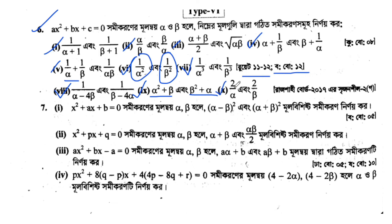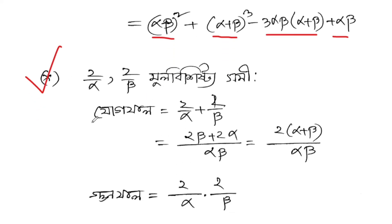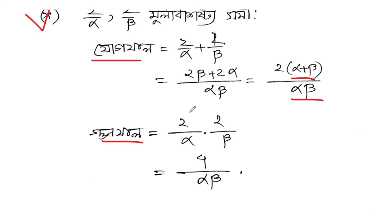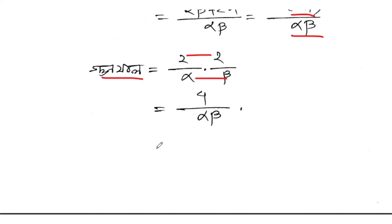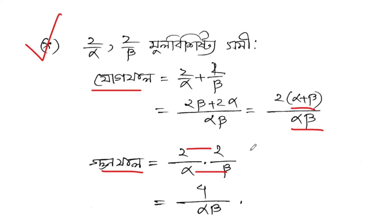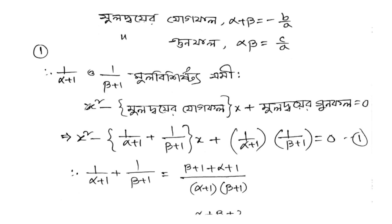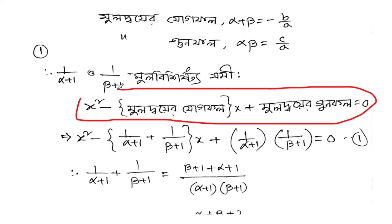The last problem: 2 by alpha plus 2 by beta. The sum is 2 by alpha plus 2 by beta equals 2(alpha plus beta) over alpha beta. The product is 2 by alpha times 2 by beta equals 4 over alpha beta. Going to form the equation: x squared minus (moon — the sum) times x plus (product) equal to zero. Substituting the known values of alpha plus beta and alpha beta to get the final equation.